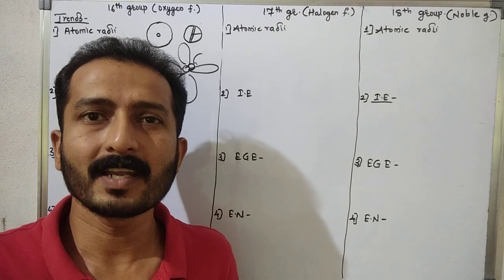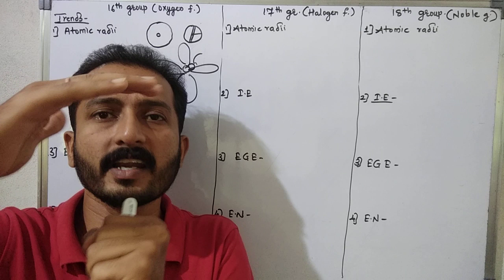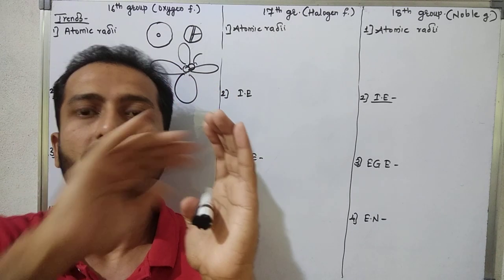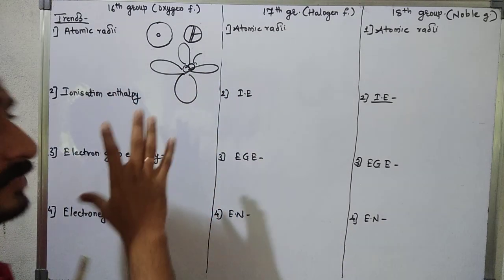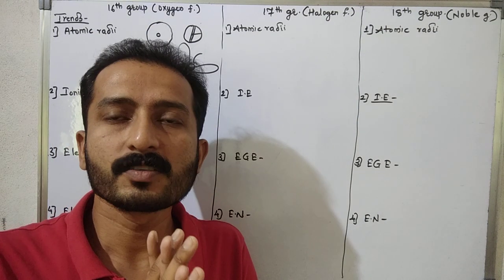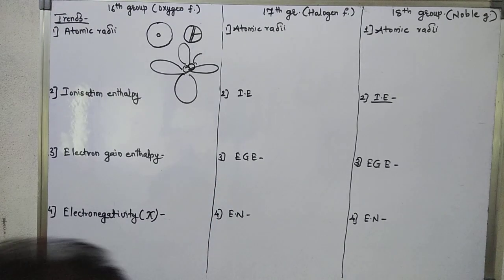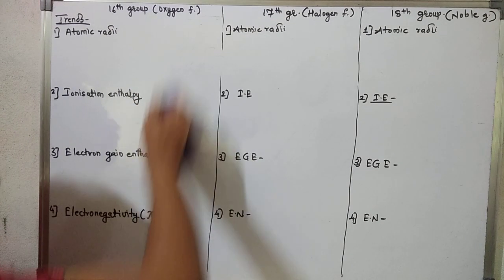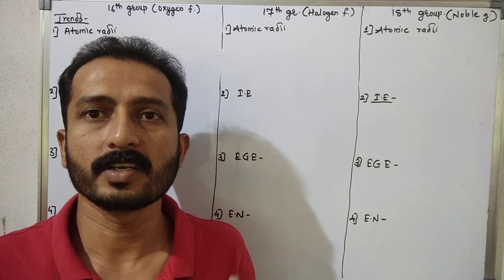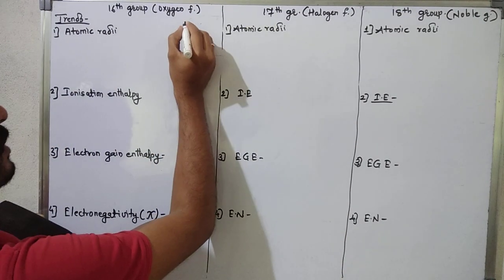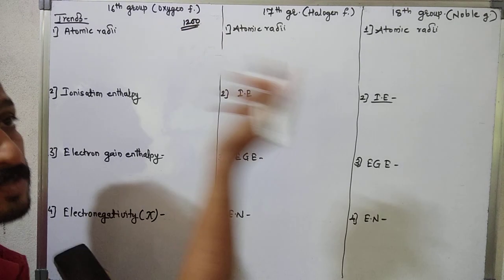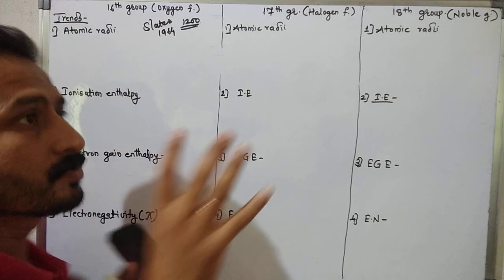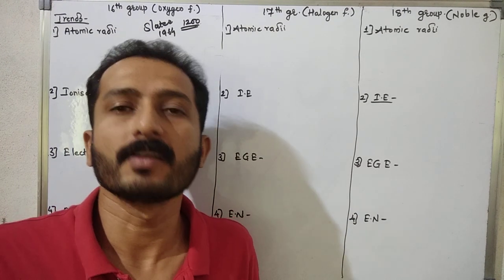The atom has no boundary like a cricket ball. Because of this, measuring atomic radii is very difficult. Therefore the scientist Slater studied some metallic, ionic, and covalent crystals. He studied nearly 1200 different types of bonds, and in 1964, after studying those bonds, he derived some empirical values for atomic radii for different atoms.